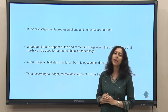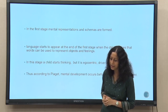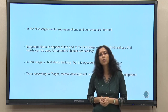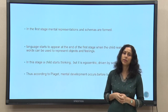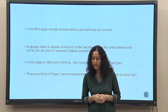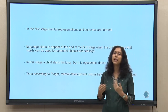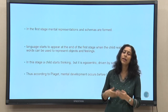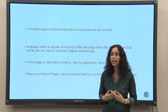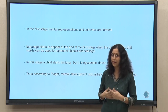Piaget talked about image schemas earlier in the course: when small children and infants interact with the physical world, their repeated experiences give rise to certain schematic understanding. There is a thought process getting concretized as the child interacts with the physical world and forms those schemas. Language starts to appear at the end of the first stage — by 2 years children are already in one-word and two-word stages. This is when the child realizes that words can be used to represent those objects and feelings.